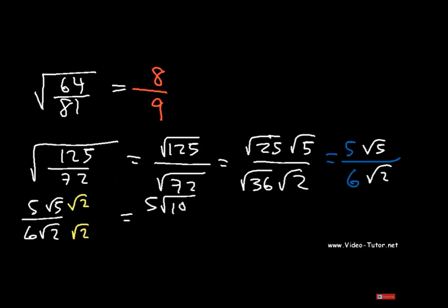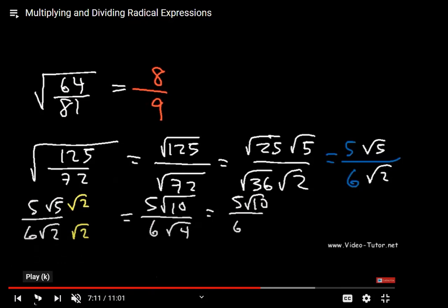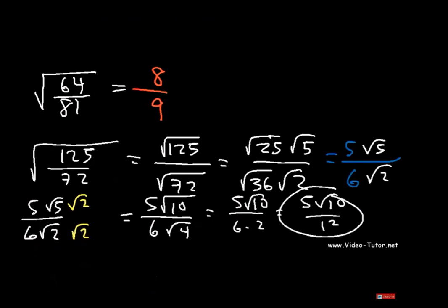We can rationalize the denominator by multiplying numerator and denominator by √2. So √5 × √2 = √10 in the numerator, and √2 × √2 = √4 in the denominator, whose square root is 2. The denominator becomes 6 × 2 = 12. Our final answer is 5√10 / 12.